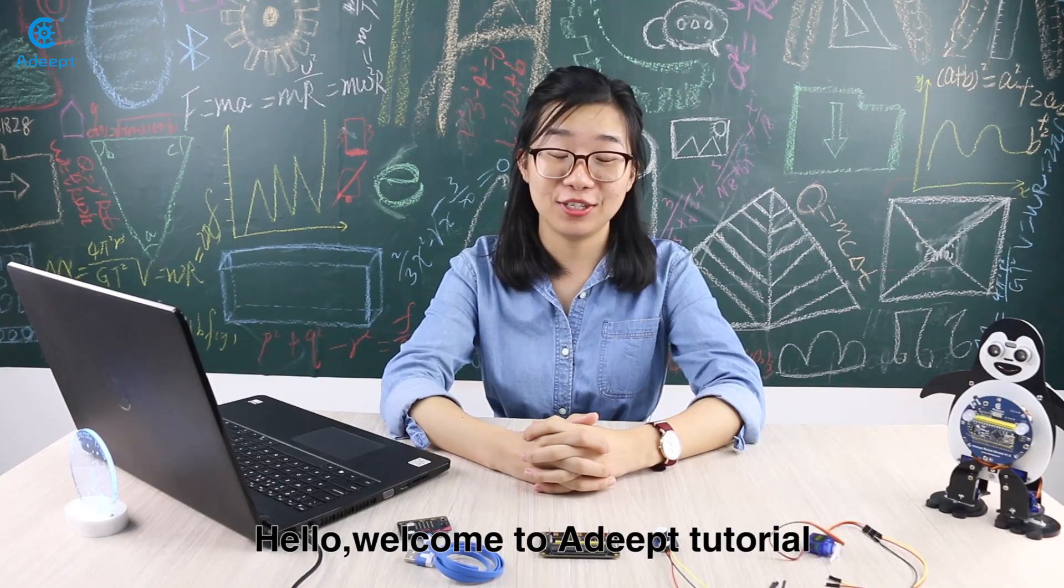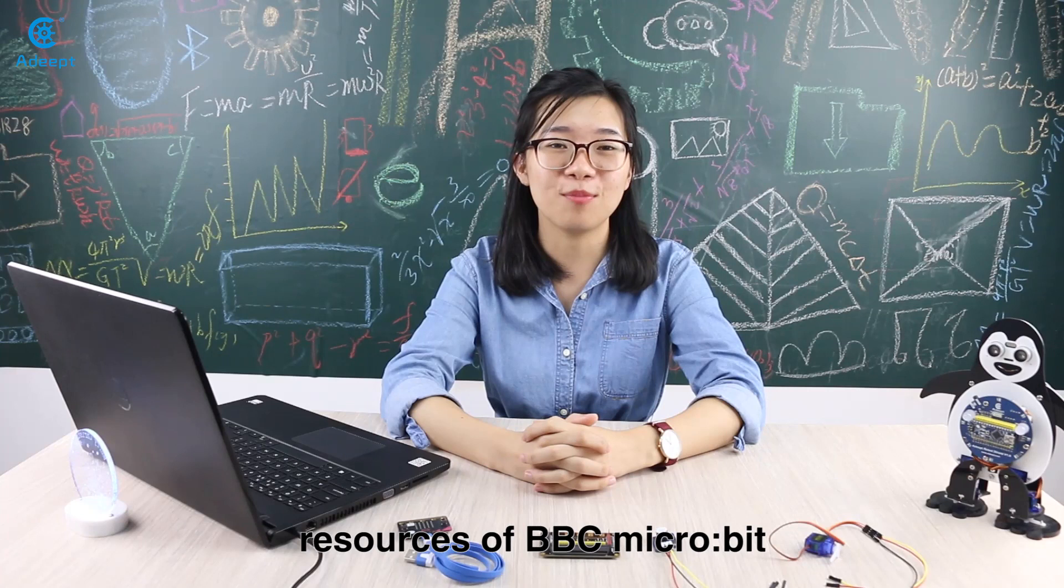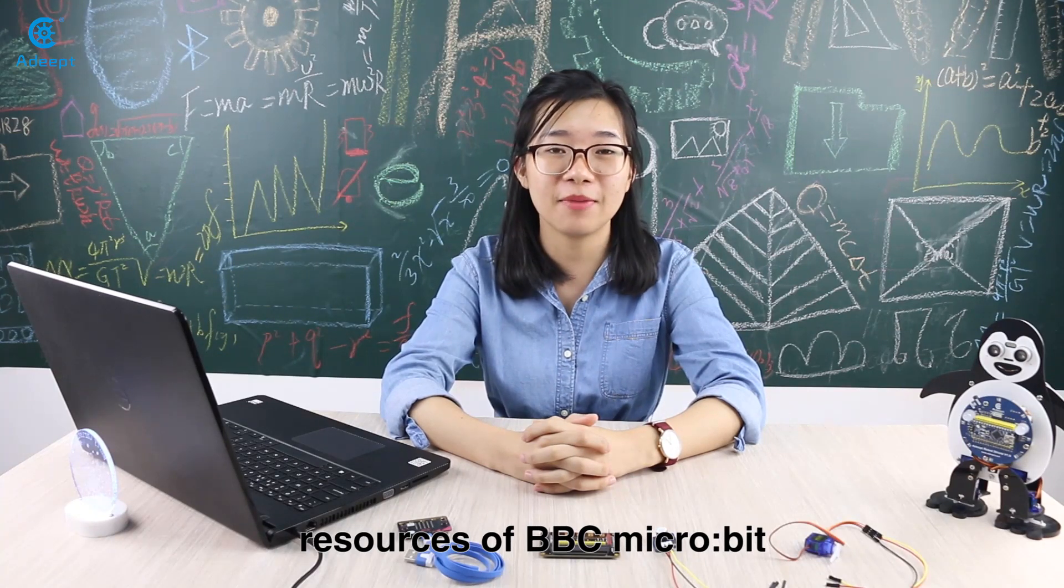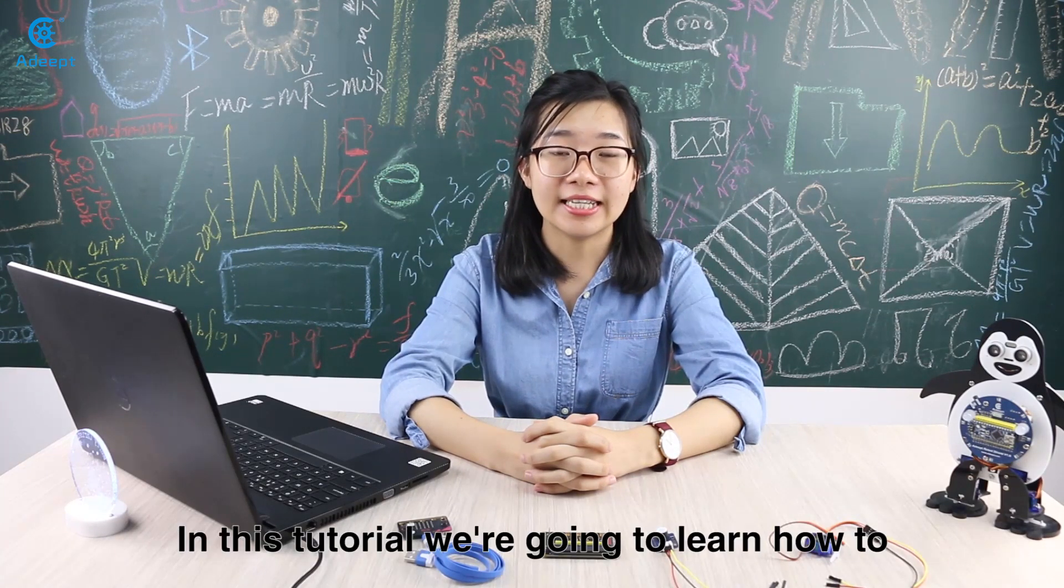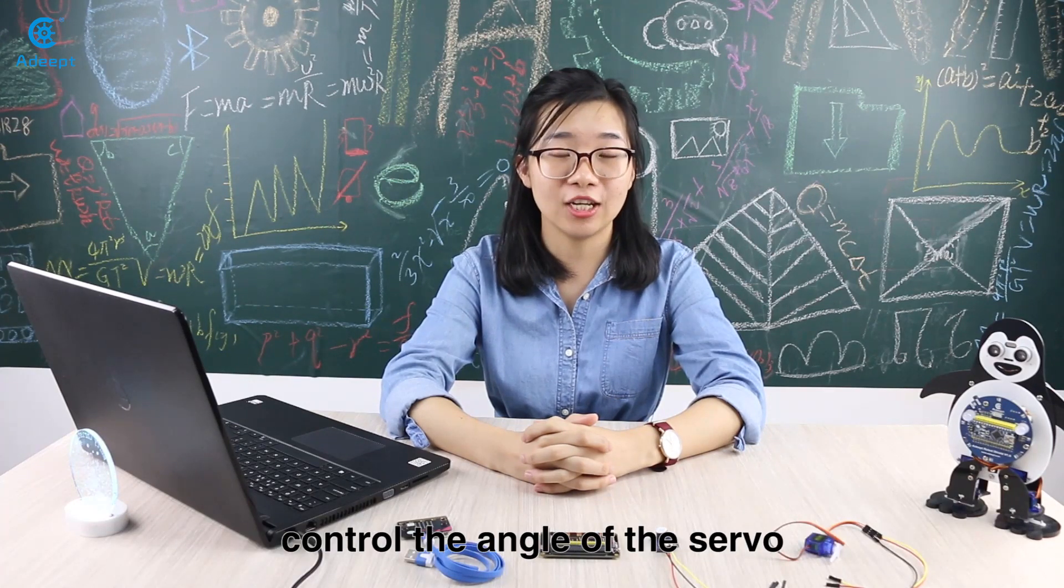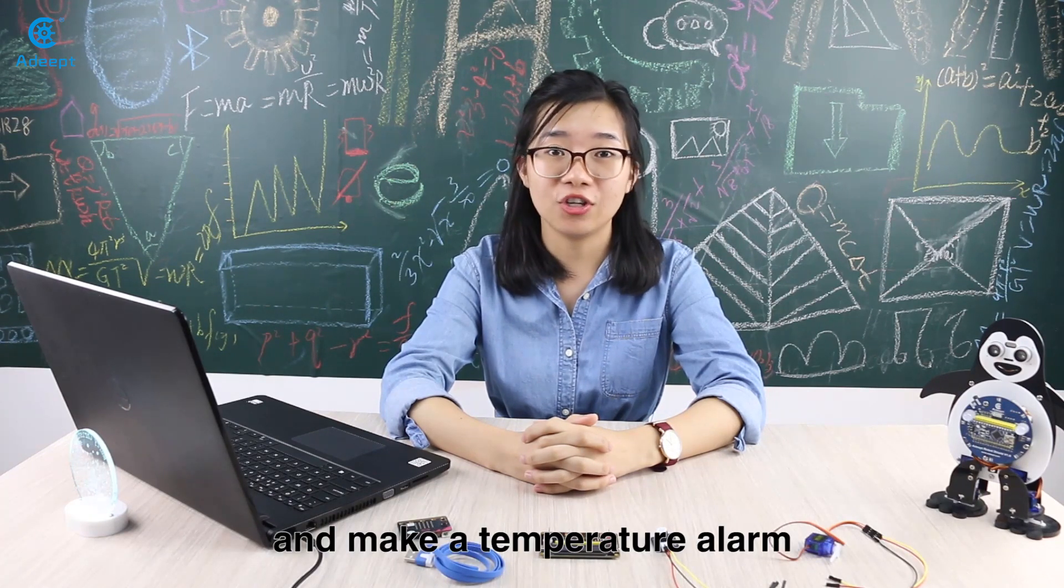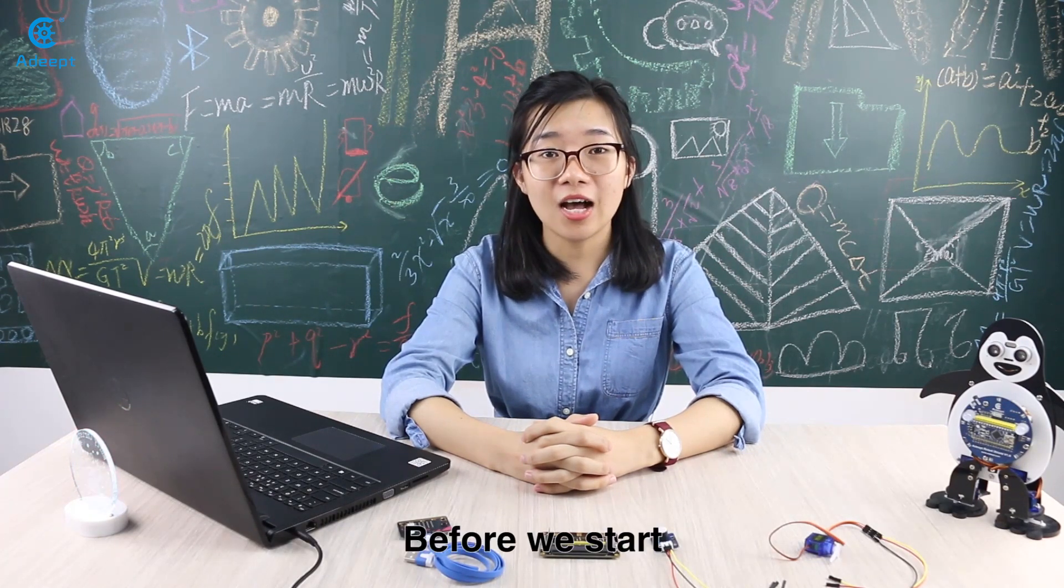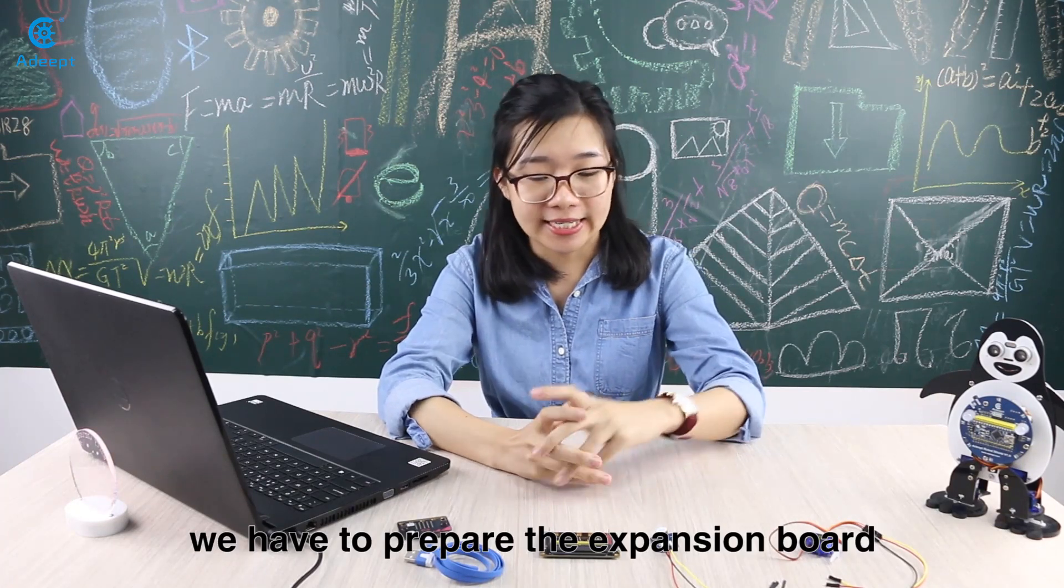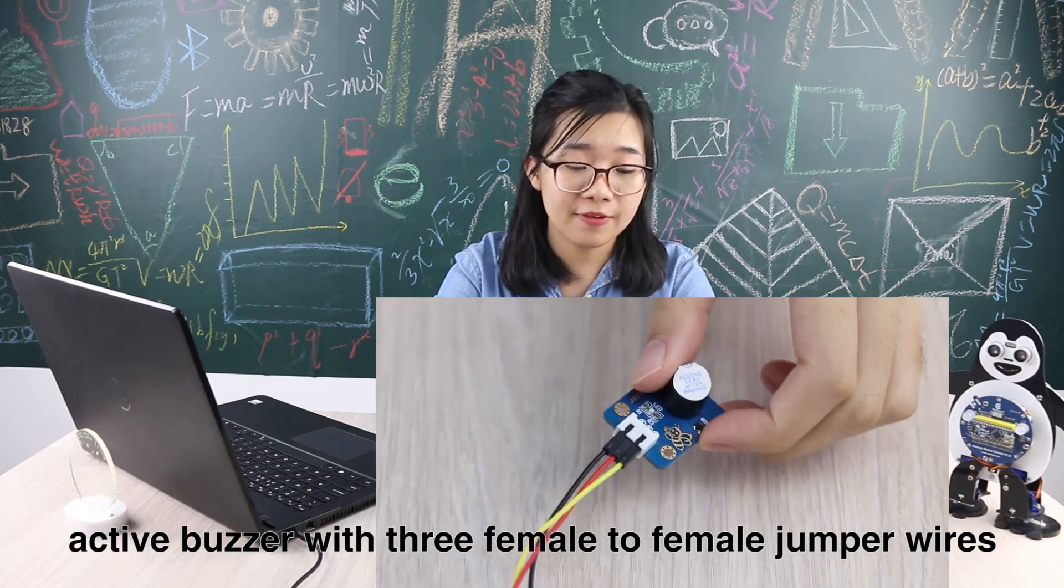Hello, welcome to a deep tutorial. Previously we have simply introduced the on-board resources of the BBC micro:bit. In this tutorial we are going to learn how to control the angle of the servo with the acceleration sensor and make a temperature alarm.